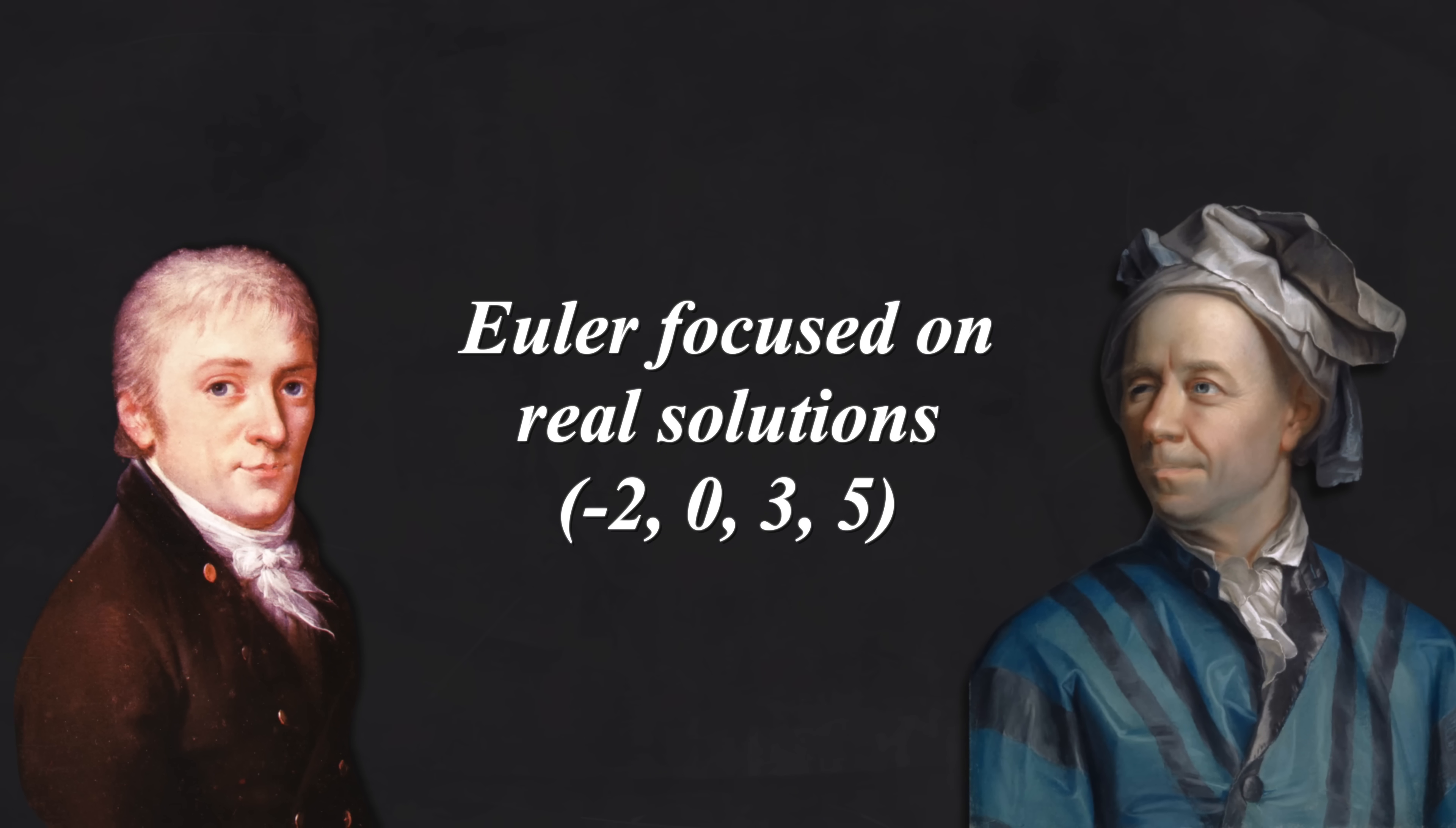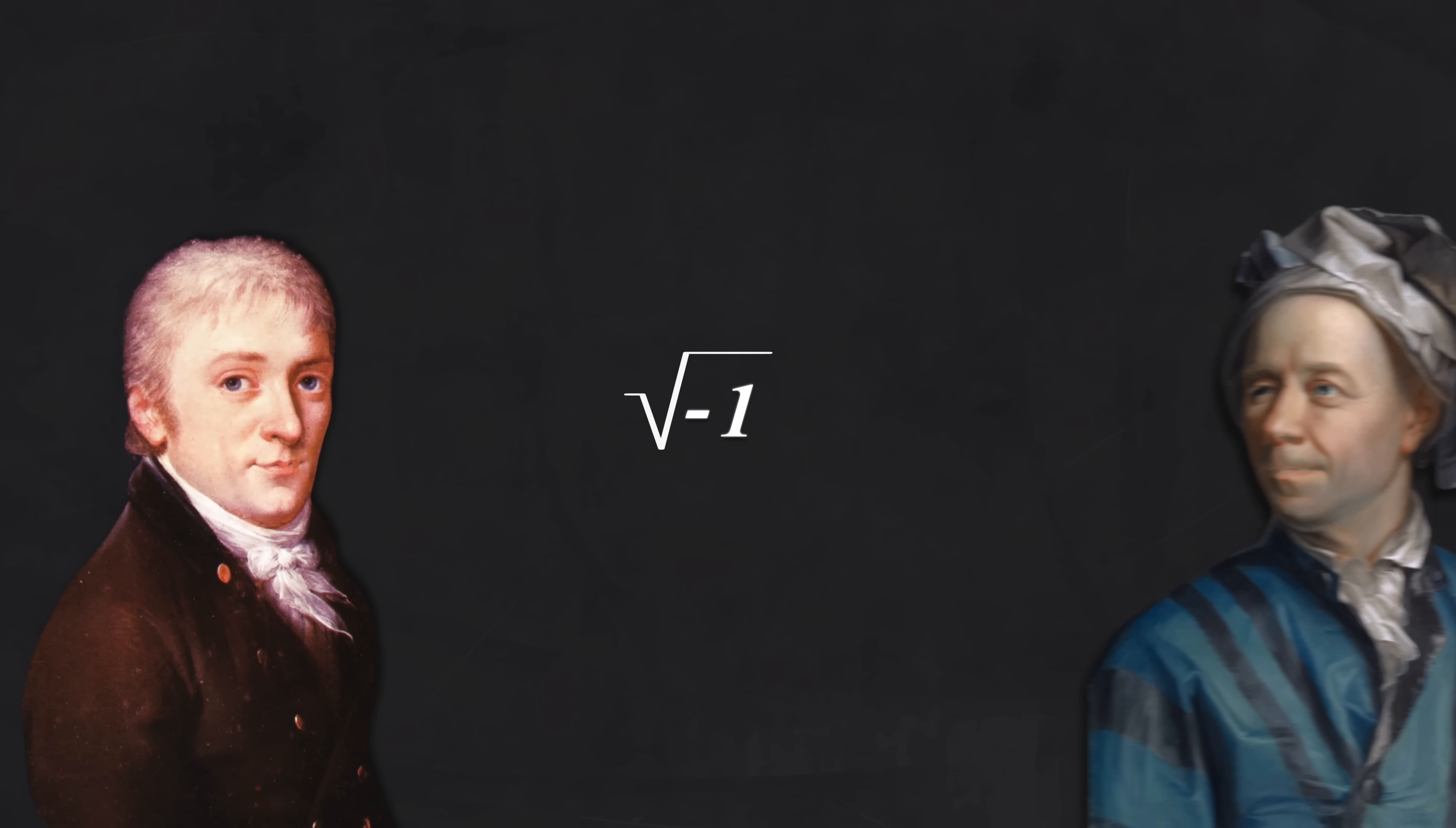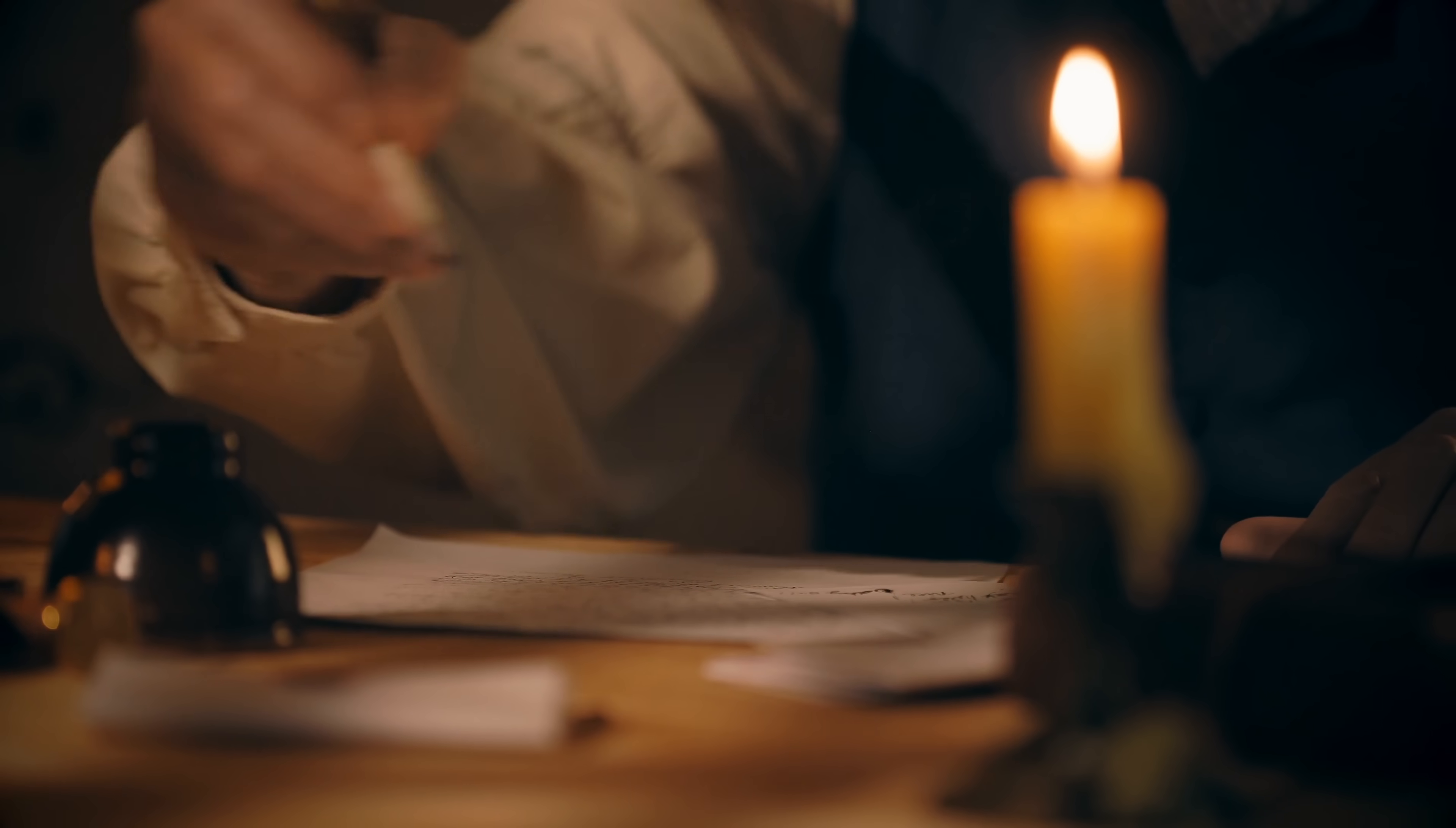Take the equation x to the power of 2 plus 1 equals 0. Rewriting it as x to the power of 2 equals minus 1 reveals the problem. No real number squared equals minus 1. Carl rigorously proved that Euler's principle holds true for all polynomials, including those with complex solutions. He later reflected to a friend,